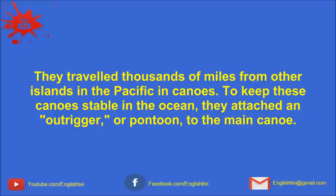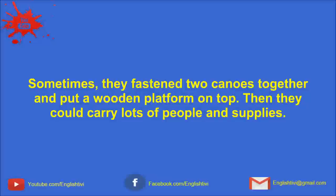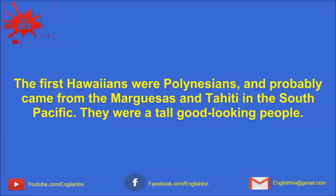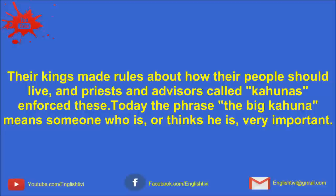To keep these canoes stable in the ocean, they attached an out-rigger, or pontoon, to the main canoe. Sometimes they fastened two canoes together and put a wooden platform on top. Then they could carry lots of people and supplies. The first Hawaiians were Polynesians, and probably came from the Marquesas and Tahiti in the South Pacific. They were a tall, good-looking people. Their kings made rules about how their people should live, and priests and advisors called kahunas enforced these. Today, the phrase 'the big kahuna' means someone who is, or thinks he is, very important.